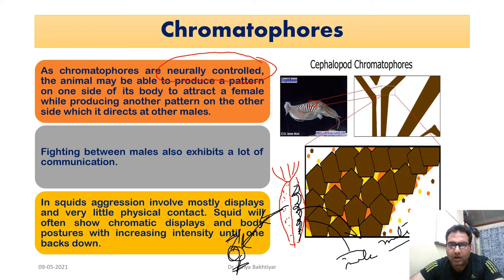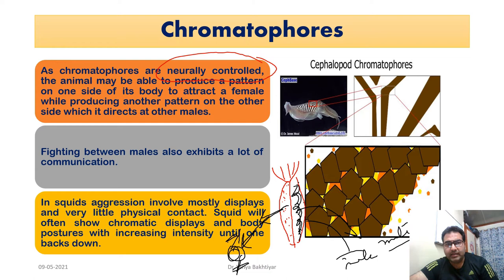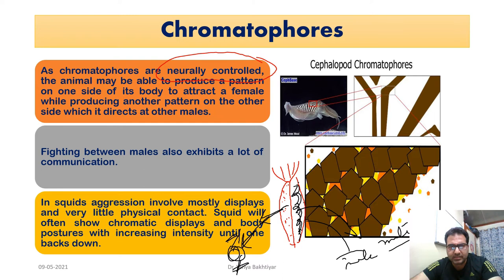In the same way as color is used in shallow water, bioluminescence is another method used where there is less light — to attract mates, lure prey, and dissuade predators. In mid-waters, photophores are used for communication, while in shallow water, different kinds of coloration are used. This is the mode of communication in these animals.